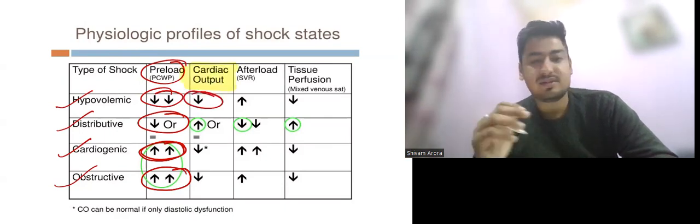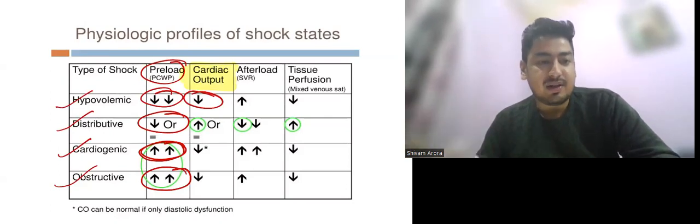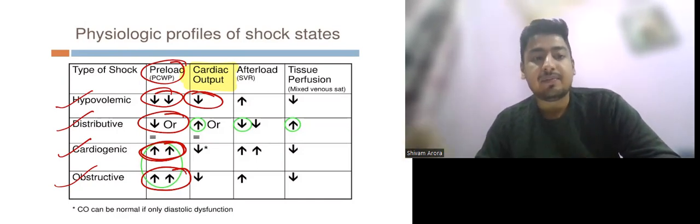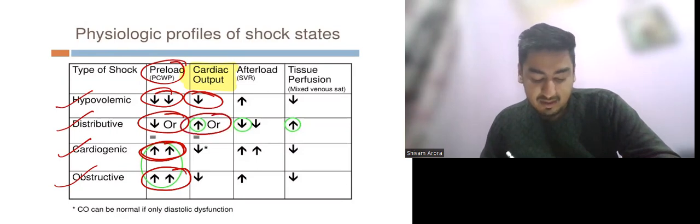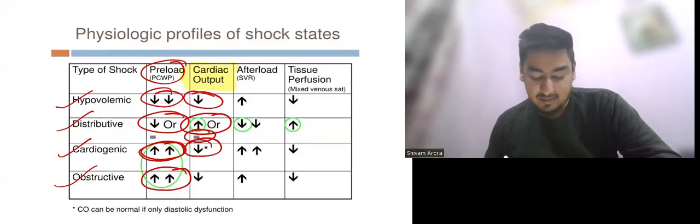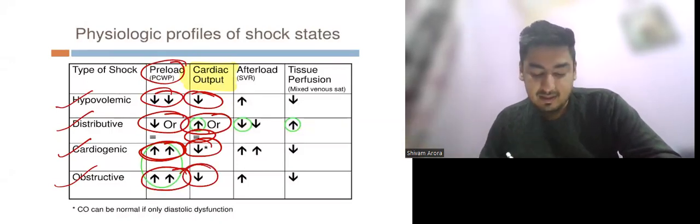In hypovolemic shock, since blood and fluid are less, cardiac output decreases. In distributive shock, systemic vasodilation occurs, so cardiac output increases or remains the same. In cardiogenic shock, cardiac output decreases because the heart cannot pump blood. In obstructive shock, cardiac output also decreases.